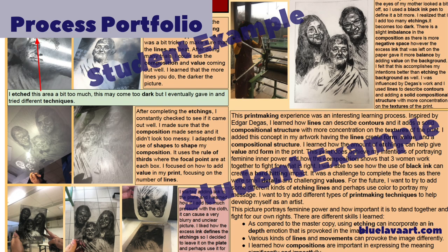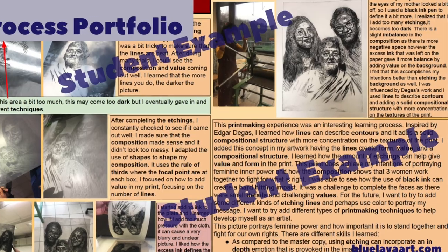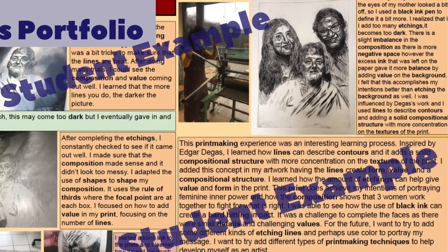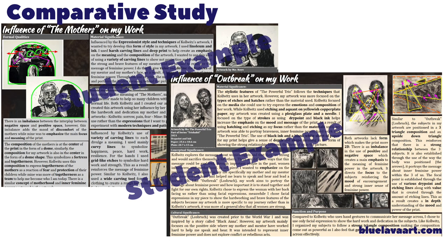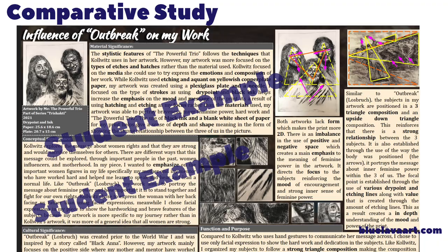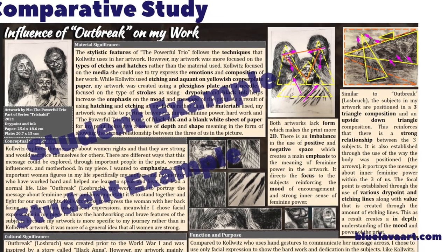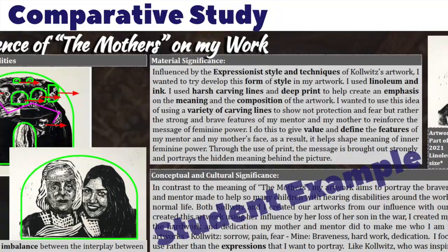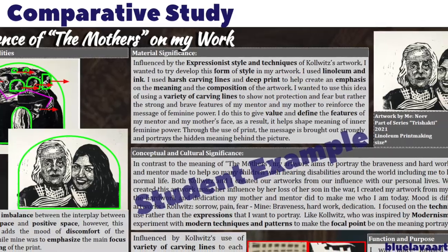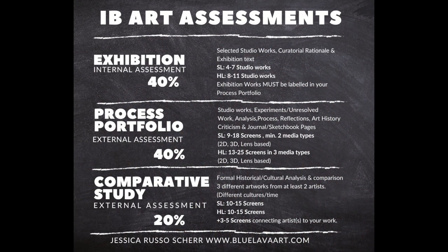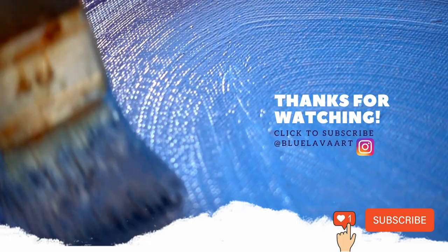My last example is not a large portrait but a printmaking project where the student used two different printmaking projects inspired by Käthe Kollwitz. You can see how their ideas regarding technique, composition, and the ideas behind the work really overlap between the process portfolio and the comparative study. These are just some strategies I use when I teach IB visual arts — this way you're using your time as efficiently as possible and addressing all of the assessment criteria that you'll be graded on. Thank you so much for joining us.